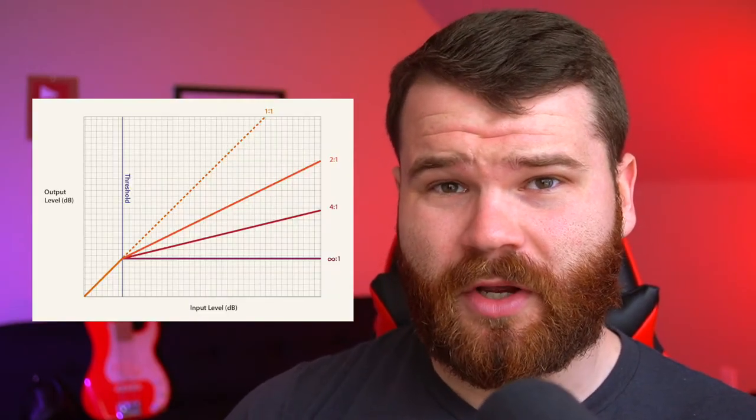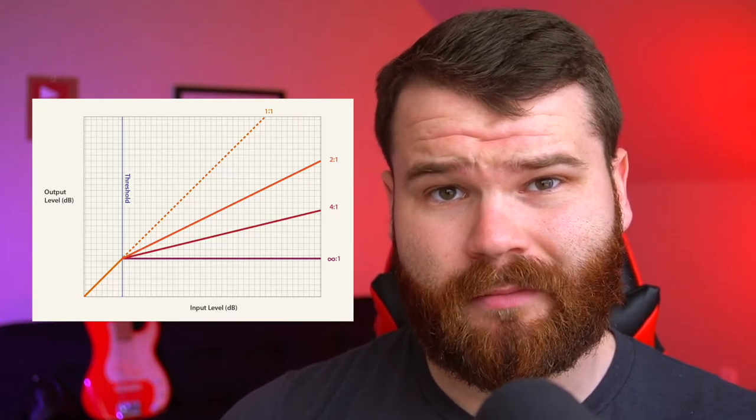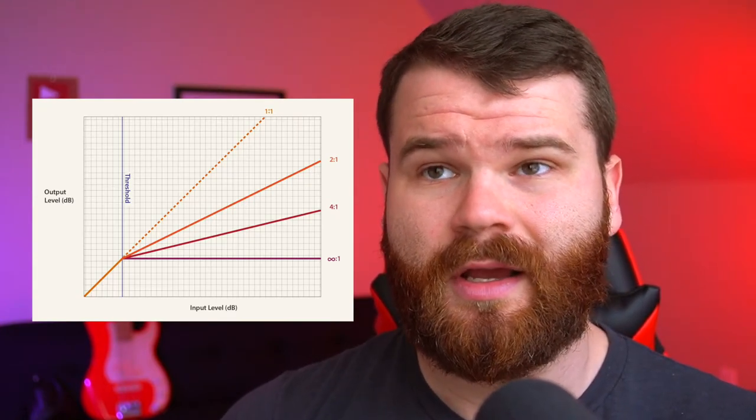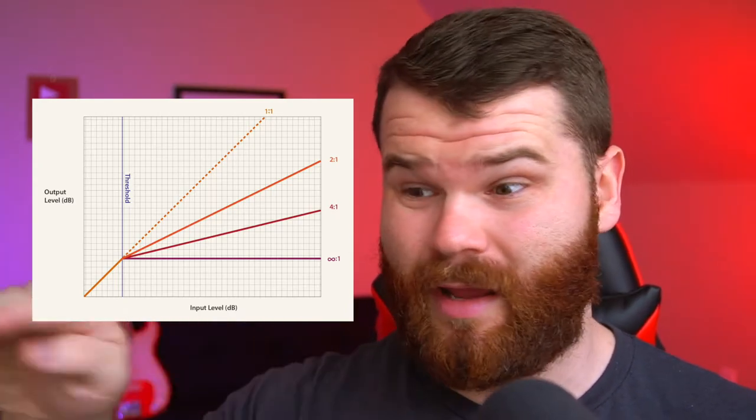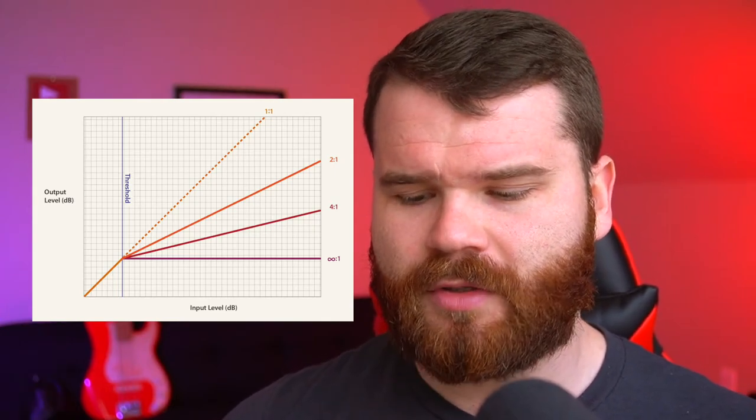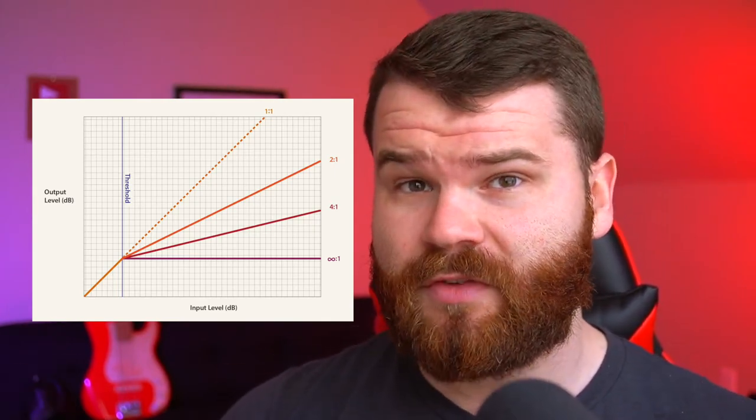The next two parameters are arguably the most important: compression ratio and output gain. The compression ratio specifies the amount of compression hitting a signal when it passes your threshold. In a 2:1 ratio, every 2 decibels over the threshold gets attenuated to 1. For example, with a 2:1 ratio and an 8 dB signal above the threshold, it gets chopped down to 4 dB. Typically, 3:1 is moderate compression, 5:1 is more severe, and 20:1 is limiting level. For most guitar players, I like to stay between 2.5:1 and 3:1.